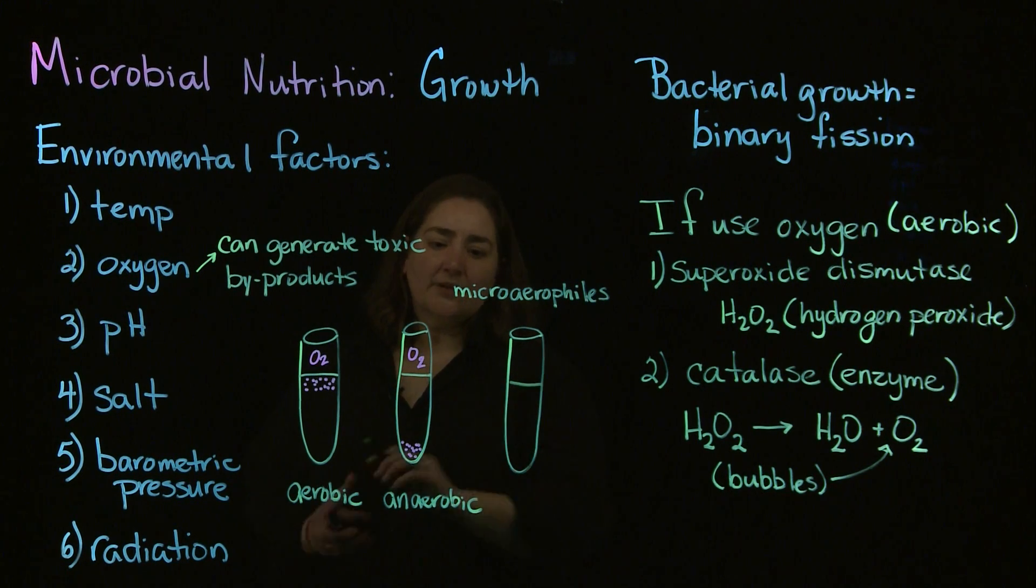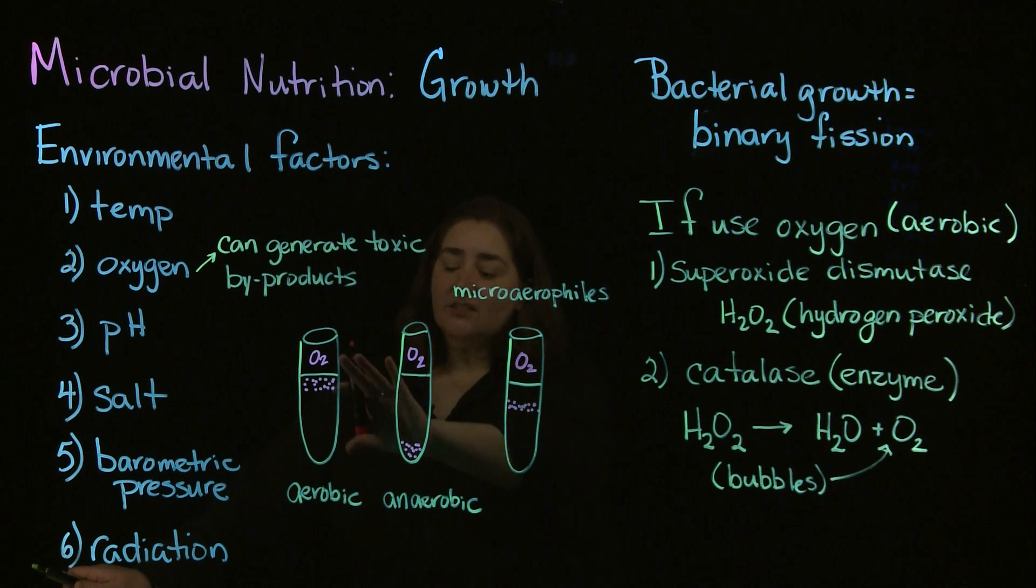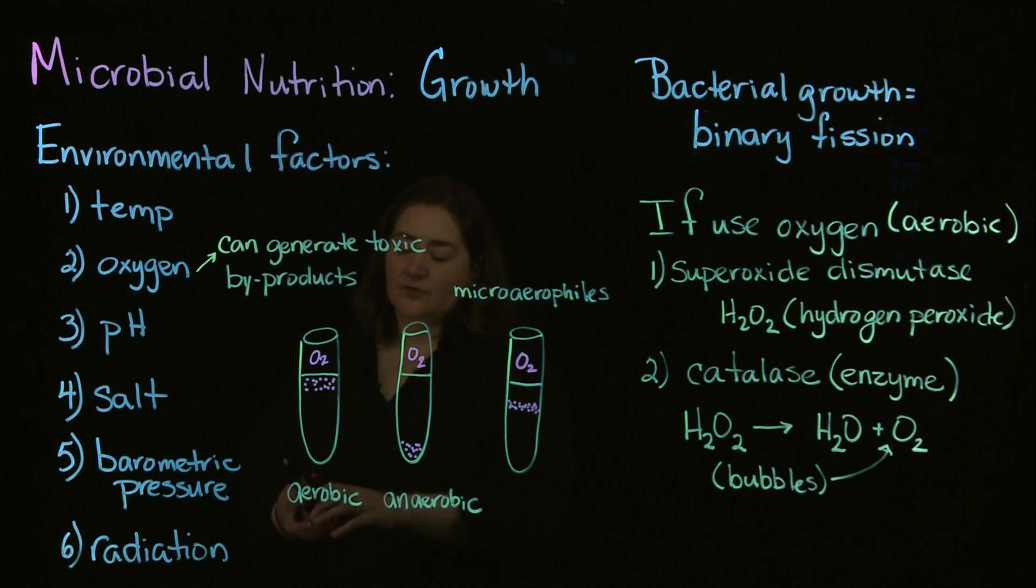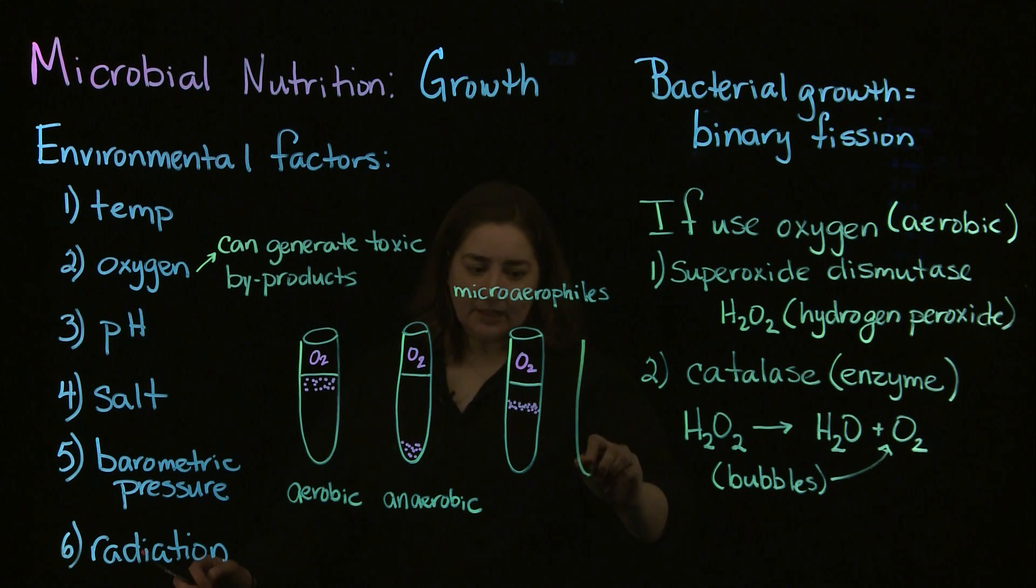Microaerophiles have very specific oxygen needs. They grow right at the point where the oxygen is optimum for them. They need less oxygen than aerobic bacteria, but they aren't completely anaerobic—they do need oxygen for survival. Microaerophiles fall somewhere below the surface in their growth patterns.